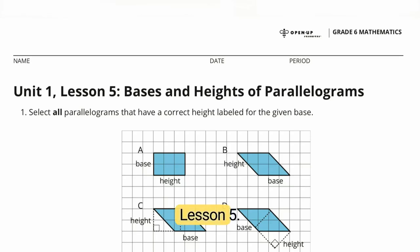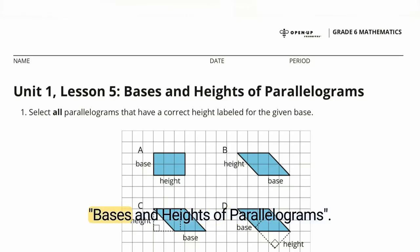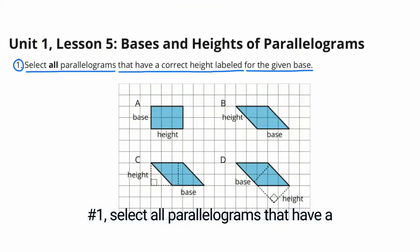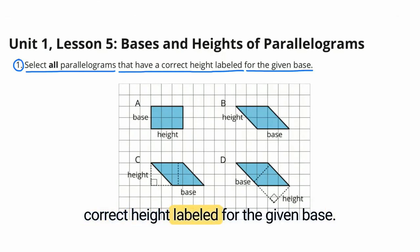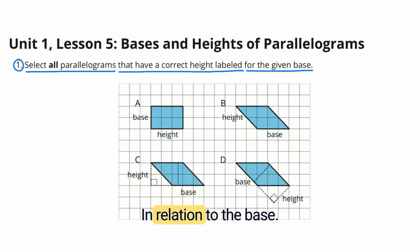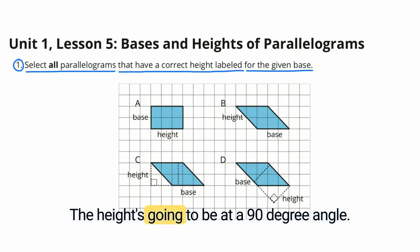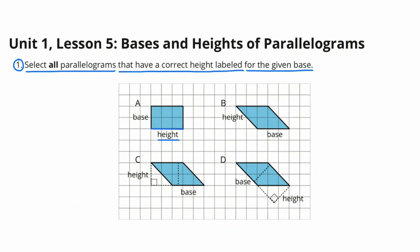Unit 1, Lesson 5: Bases and Heights of Parallelograms. Problem 1: Select all parallelograms that have a correct height labeled for the given base. In relation to the base, the height is going to be at a 90-degree angle.